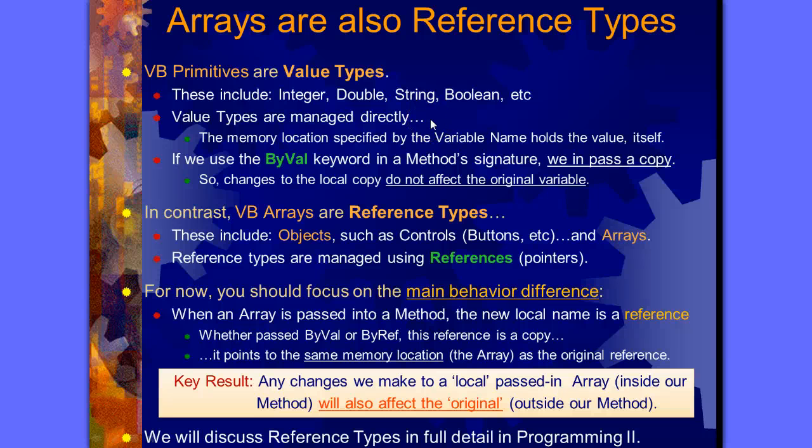Okay, so arrays are also reference types. Let's see, Visual Basic primitives are value types. These include integers, doubles, strings, booleans, all these things that we've seen before. These are called primitives.